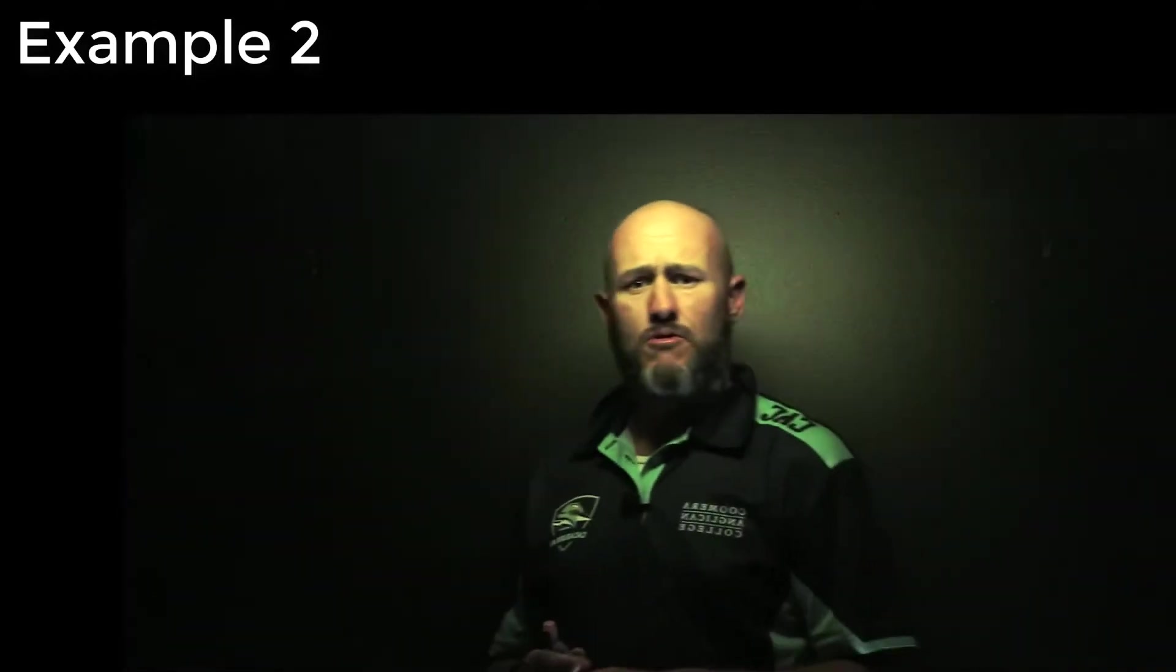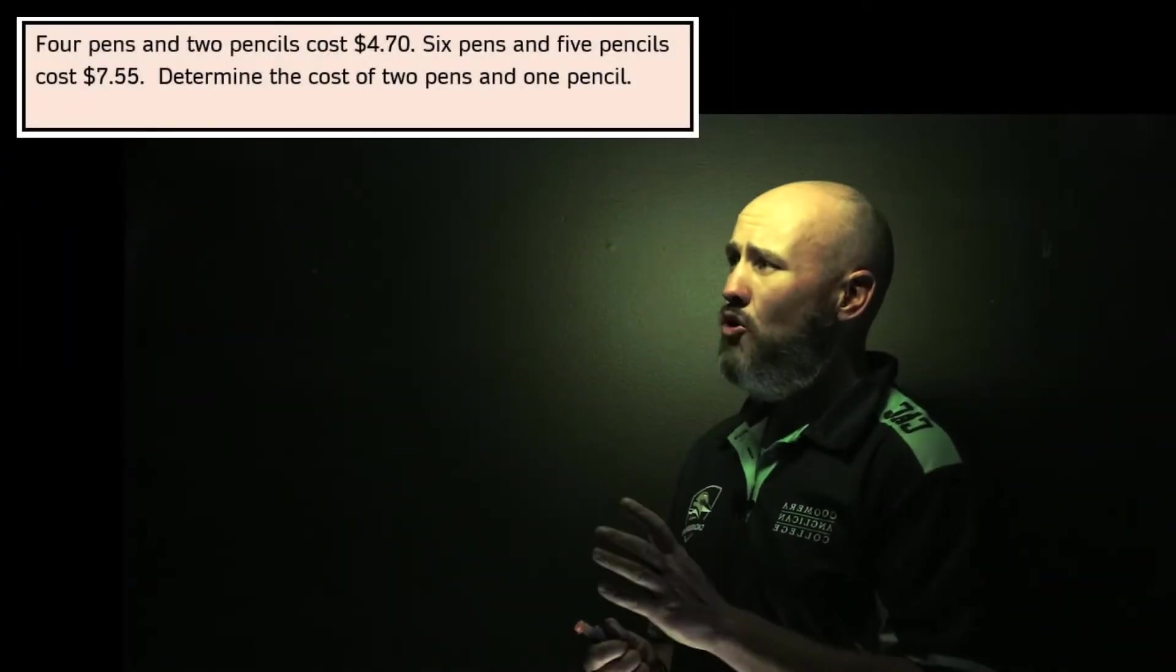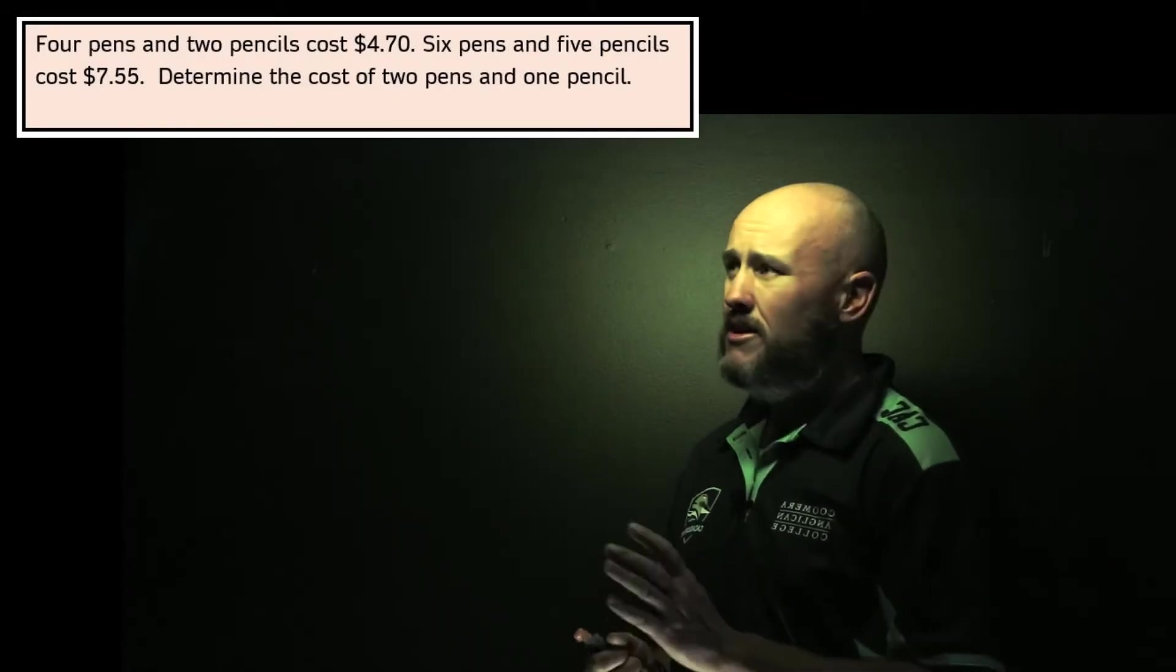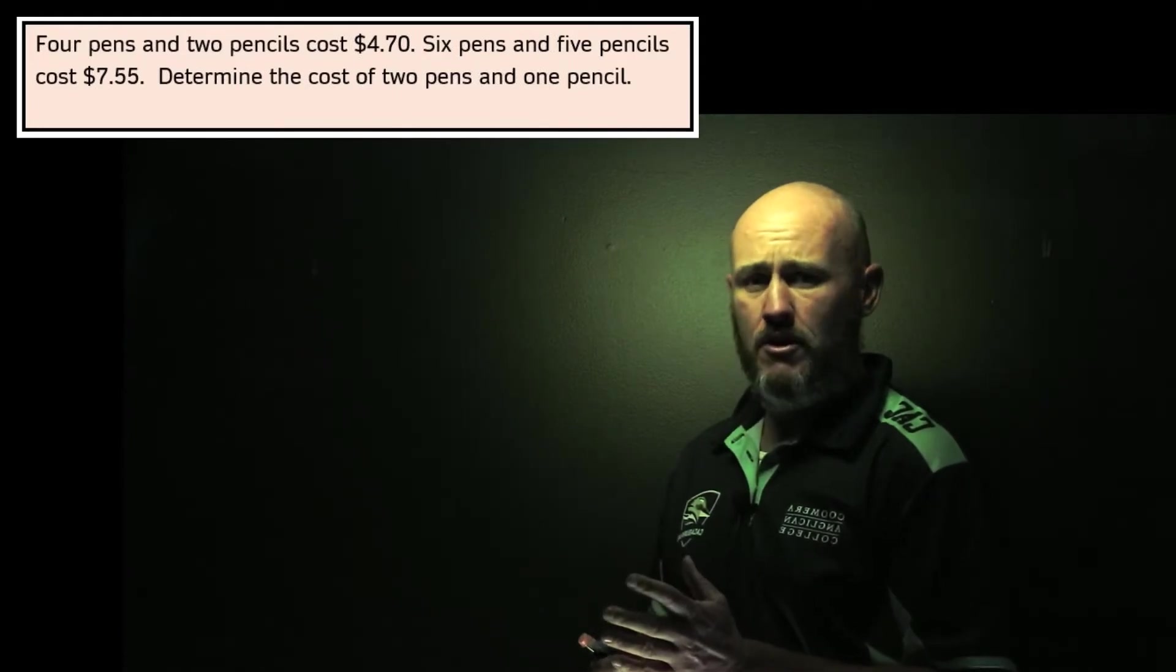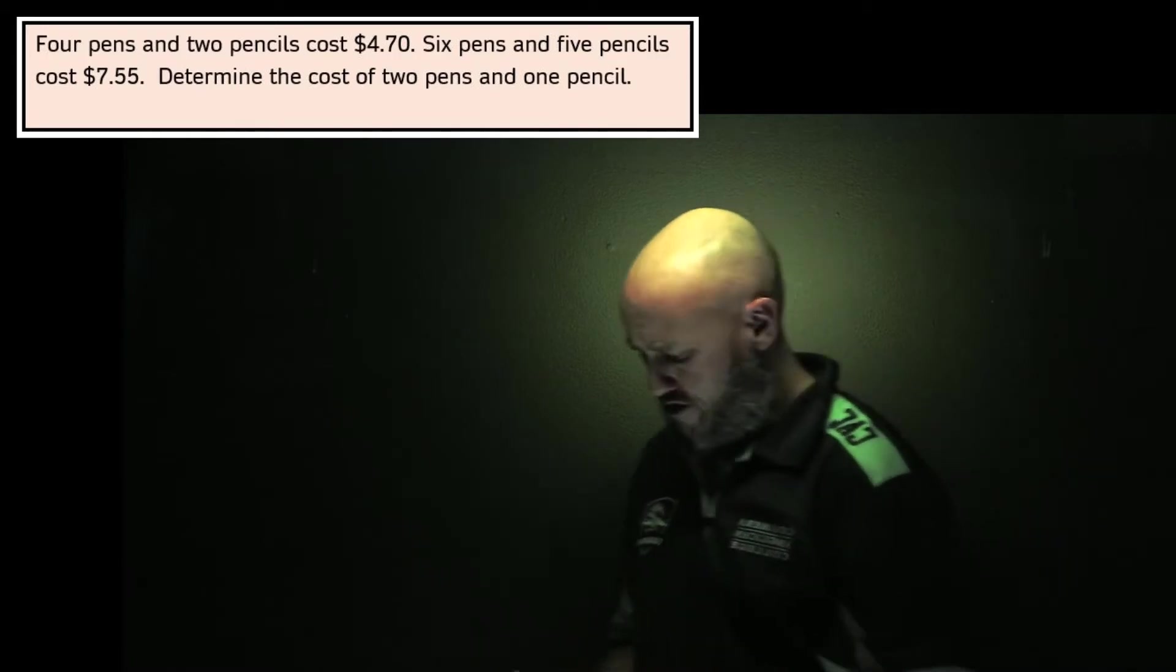So here's example two. We're going to look at a common shopping problem. Four pens and two pencils cost $4.70, and six pens and five pencils cost $7.55. We'd like to know the cost of two pens and one pencil.